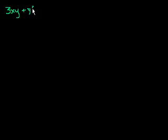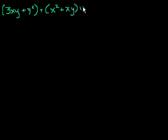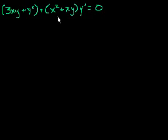Let's say we have an equation that has this form — this is my differential equation: 3xy plus y squared, plus x squared plus xy times y prime is equal to 0. Especially since we've covered this in recent videos, whenever you see an equation of this form where you have some function of x and y and then another function of x and y times y prime equals 0, you say: oh, this looks like it could be an exact differential equation.